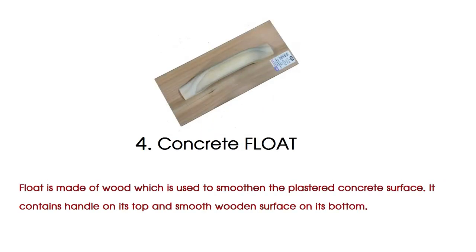Concrete float is made of wood which is used to smoothen the plastered concrete surface. It contains a handle on its top and a smooth wooden surface on its bottom.